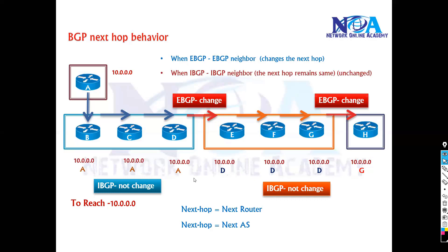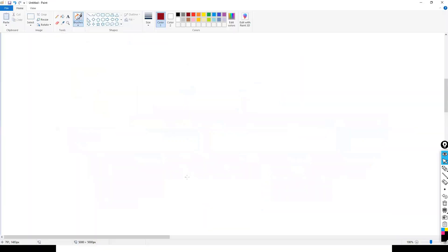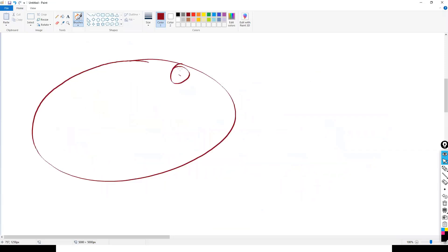This is the default behavior in BGP. The first thing we need to understand is this default behavior. Now, what is the impact? There will be some routing impact and reachability issues because of this default behavior. Let's try to see with an example: this is my organization, I am running BGP on this router, and I am peering with my service border 1.